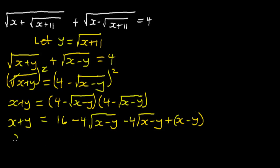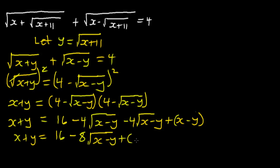We now have X plus Y equal to 16 minus 4 times the square root of X minus Y, minus 4 times the square root of X minus Y, plus X minus Y, giving minus 8 root of X minus Y. We transpose the terms without the radical sign to one side and keep the one with the radical sign on the other.